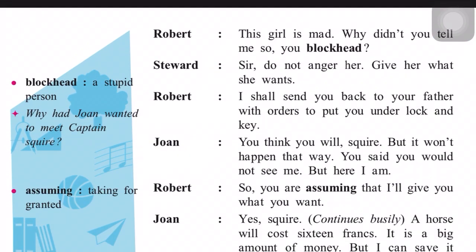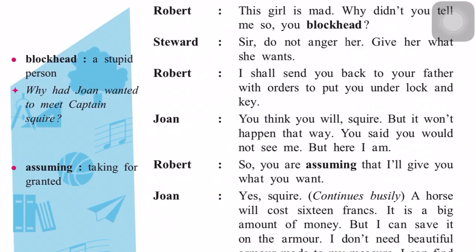Robert says: 'The girl is mad. Why didn't you tell me so, you blockhead?' So Robert looks at his steward saying this girl is mad. The steward says: 'Sir, do not anger her. Give her what she wants.' The steward is only saying don't do that, give her what she wants. Robert says: 'I shall send you back to your father with orders to put you under lock and key' — meaning he will tell her father to lock her up. Joanne replies: 'You think you will, squire, but it won't happen that way. You said you would not see me, but here I am.' She is saying: you thought you wouldn't meet me, but now I am talking to you.